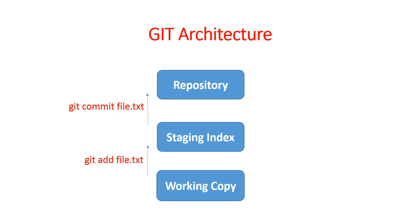Why is there one more stage - staging index? क्योंकि हो सकता है जितने भी changes आपने working copy में किये, वो सारे के सारे आपको push ना करना हो। हो सकता है उसमें से partial changes आपको commit करना हो और बाकी ना करना हो, इसलिए git में staging index का concept आया। मान लीजिए आपने 15 files पे काम किया, पर सिर्फ 5 files की changes आपने commit किये और बाकी working copy में ही रहने दिये। This is the difference between git architecture and other version control systems।